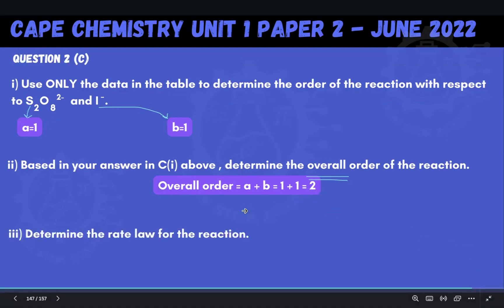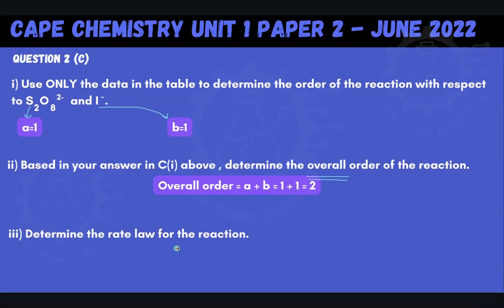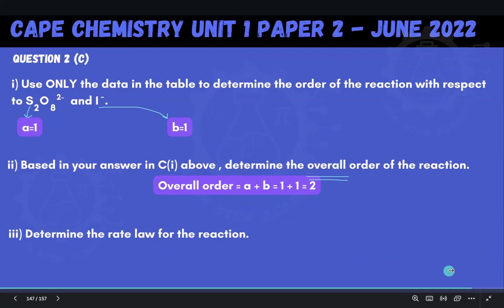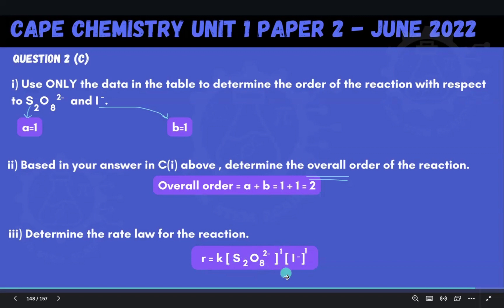Now we determine the rate law for the reaction. The rate R is equal to the rate constant k times the concentration of the peroxodisulfate ions raised to the power of 1, times the concentration of the iodide ion raised to the power of 1, since the rate is first order in both reactants.